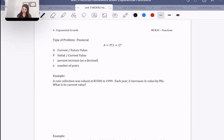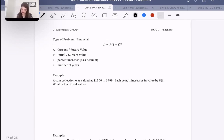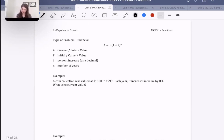Let's talk about this example here. It says a coin collection was valued at $1,500 in 1999. Each year it increases in value by 8%. What is its current value? So let's think about this. What kind of question is it? Is it a question where we bought something today and we want to know in some number of years how much will it be worth? Or is it a question where we bought something years and years ago when we were very young, and perhaps now we would like to know what's it worth today? And the answer is it's a second type of question. It's we bought something previously, we want to know what is it worth currently today. So therefore we're going to be using current and initial, not future.